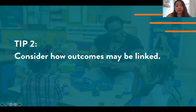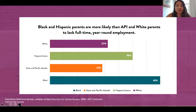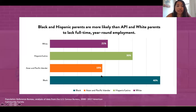Tip number two is: consider how outcomes may be linked. We know that one data point can lead us to consider another, which may have bigger implications for policy and practice change. Continuing with the example about children experiencing poverty, we can consider data on parental employment. We can see from the graph here that Black and Hispanic parents are more likely than API and white parents to lack full-time year-round employment. So we're seeing that breakdown by race and we can already see some differences across racial groups. This data helps us to start seeing what some of the structural barriers might be.